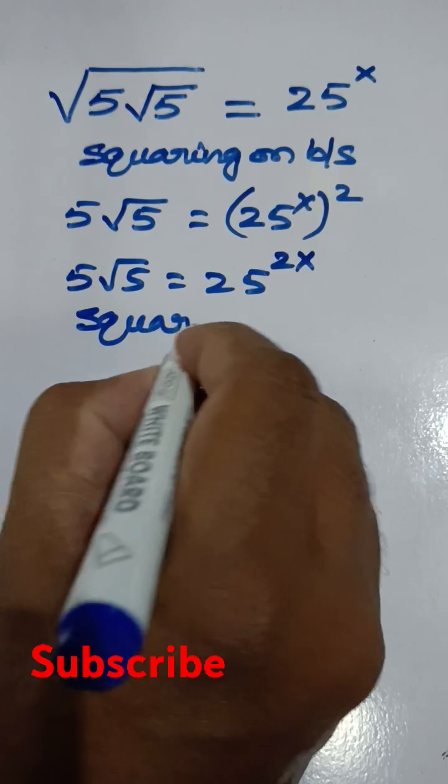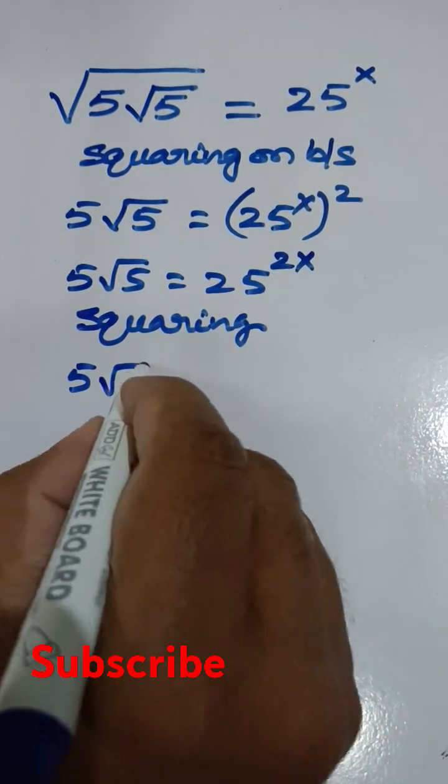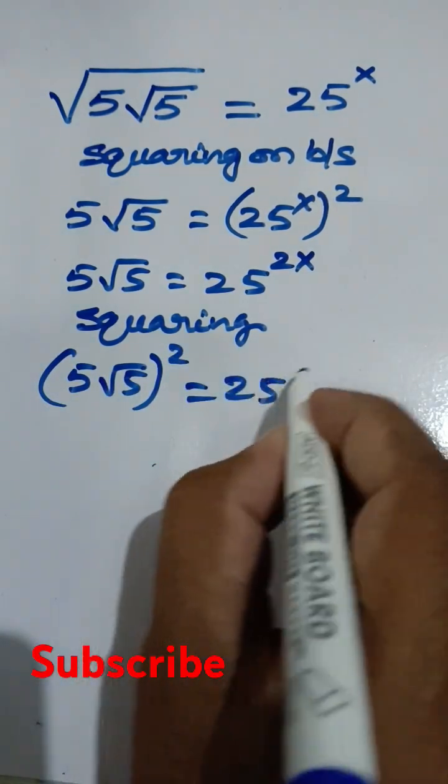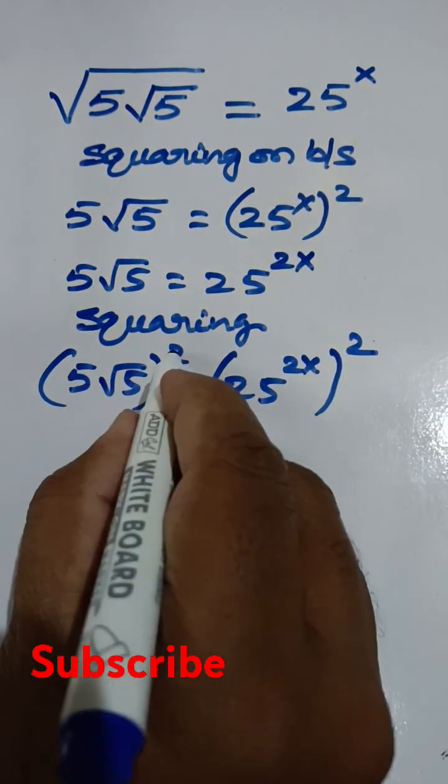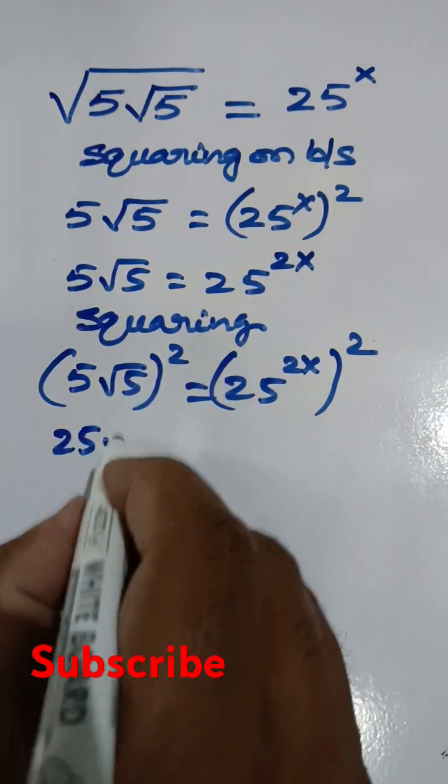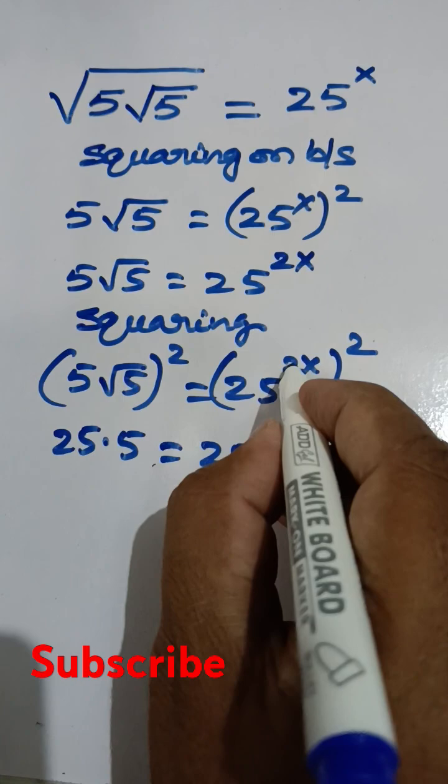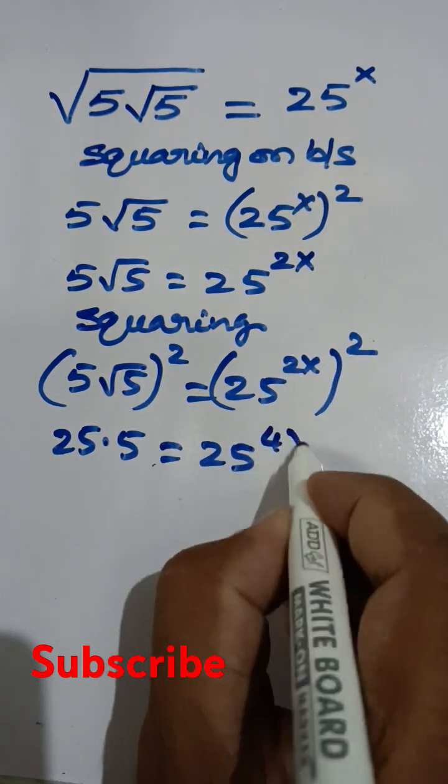Squaring on both sides again, we get (5√5)² equals (25^(2x))². The left side: 5² is 25 times (√5)² is 5, giving us 25·5. The right side is 25^(2x) to the power of 2, which is 25 to the power of 4x.